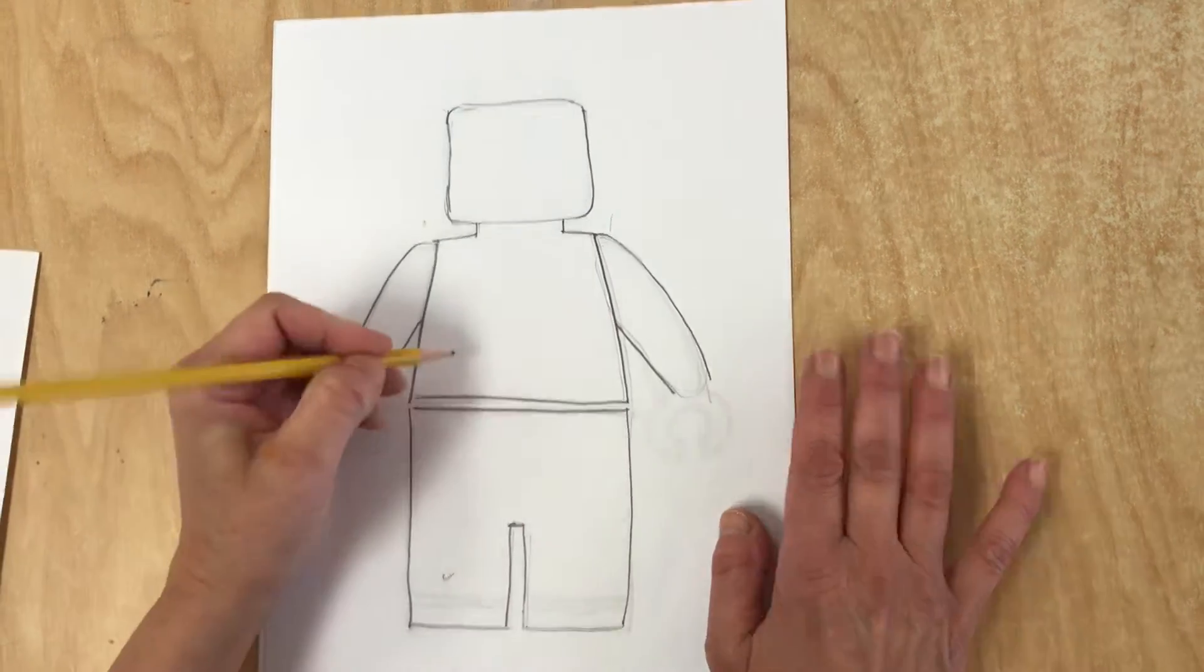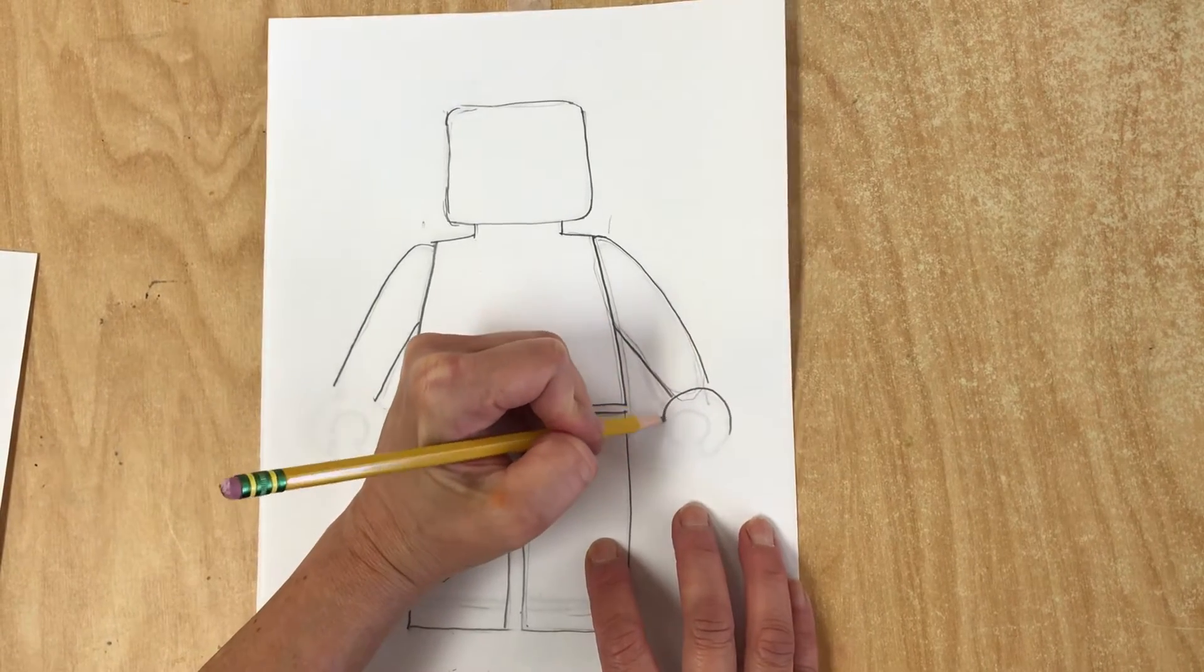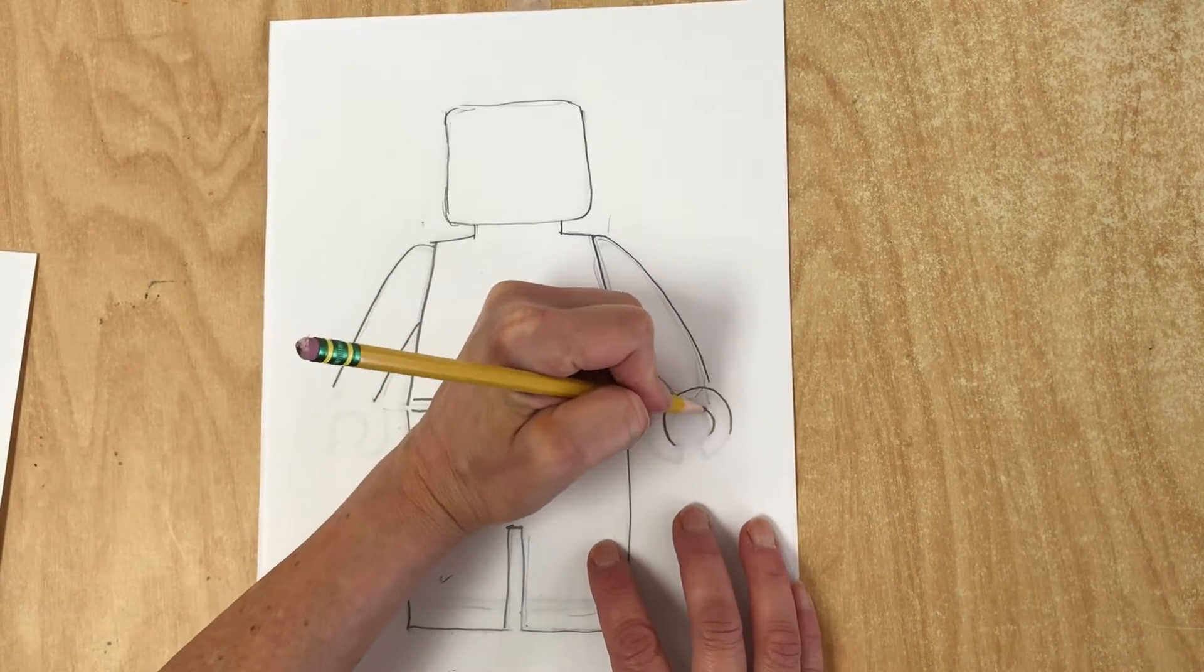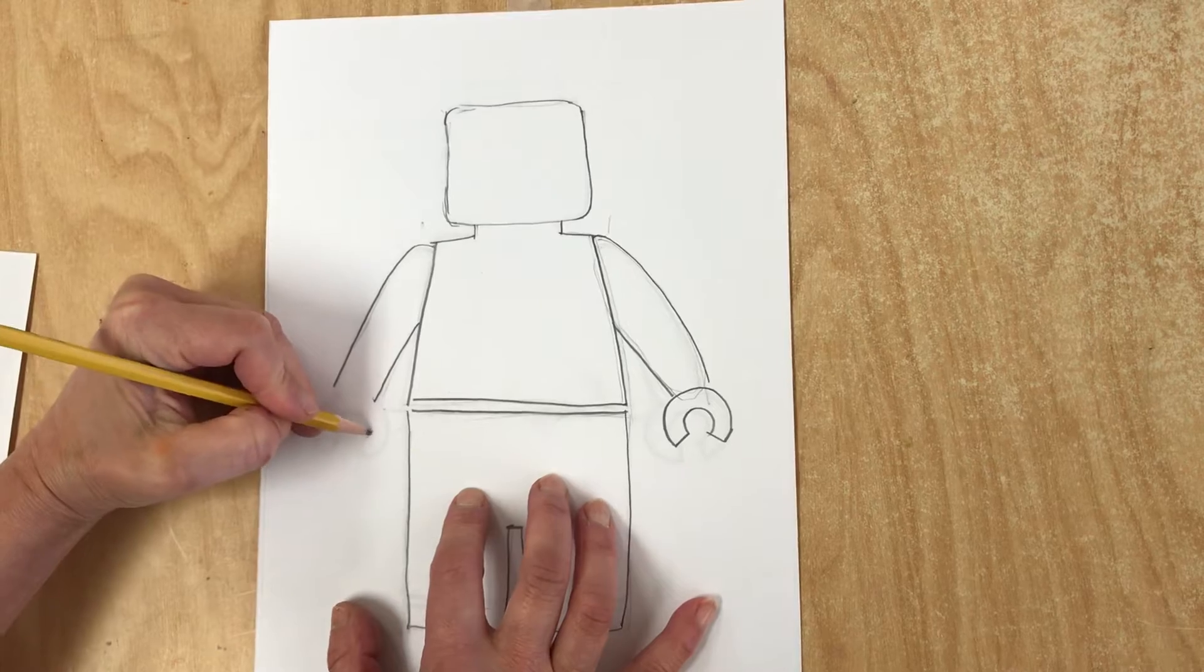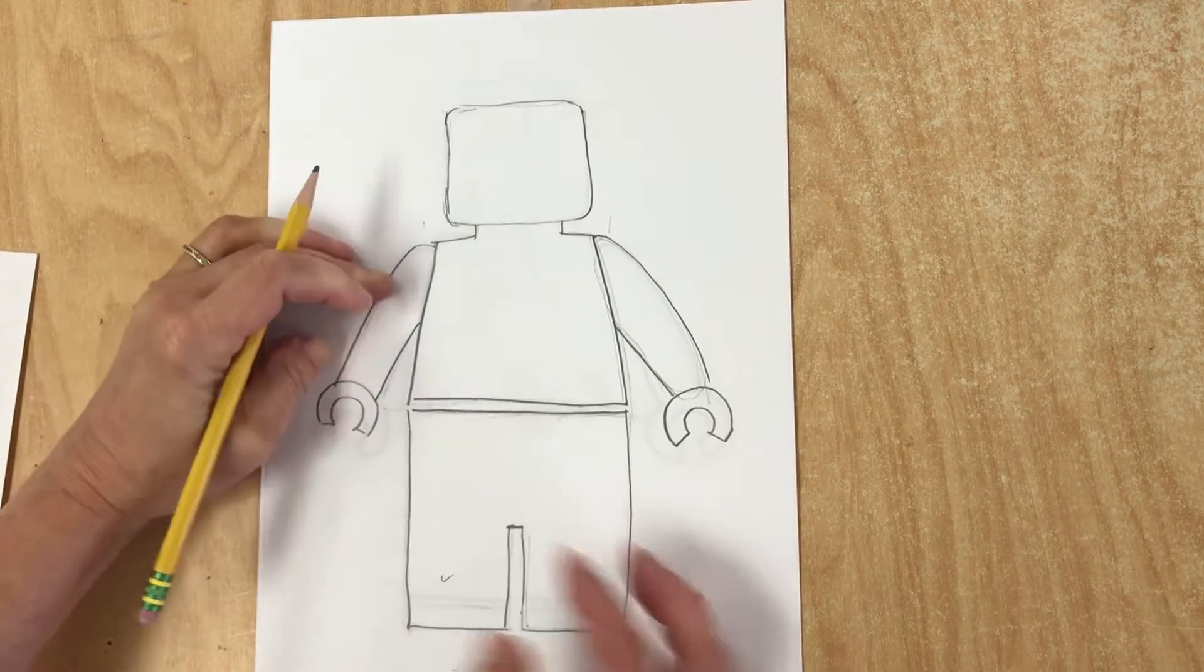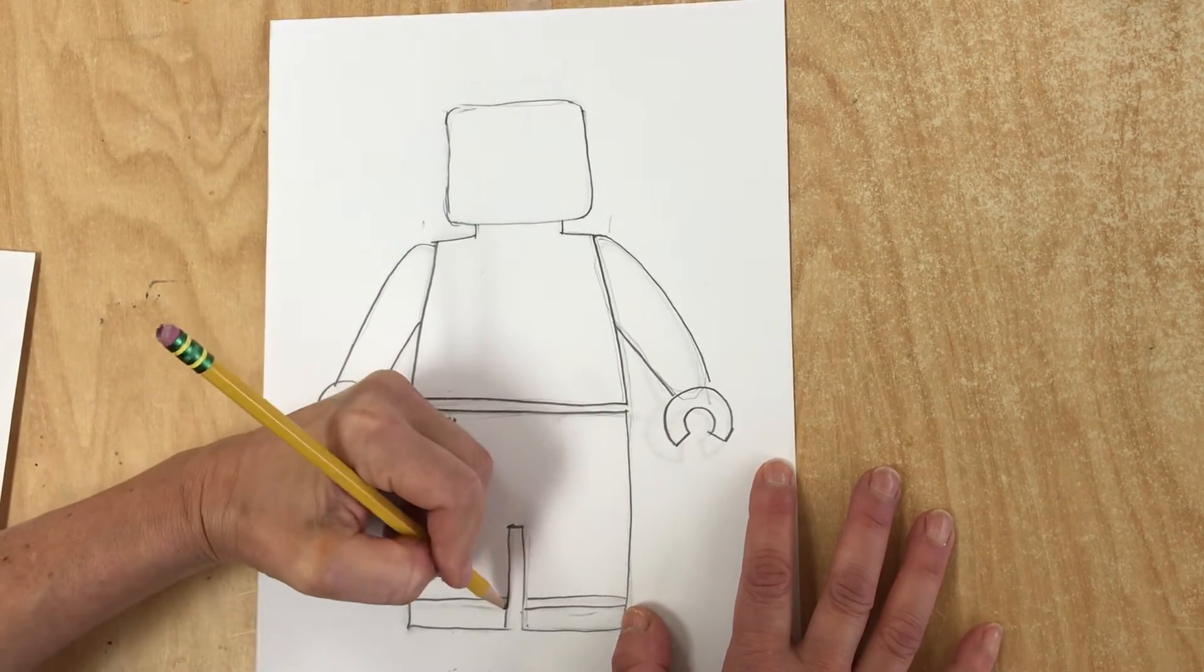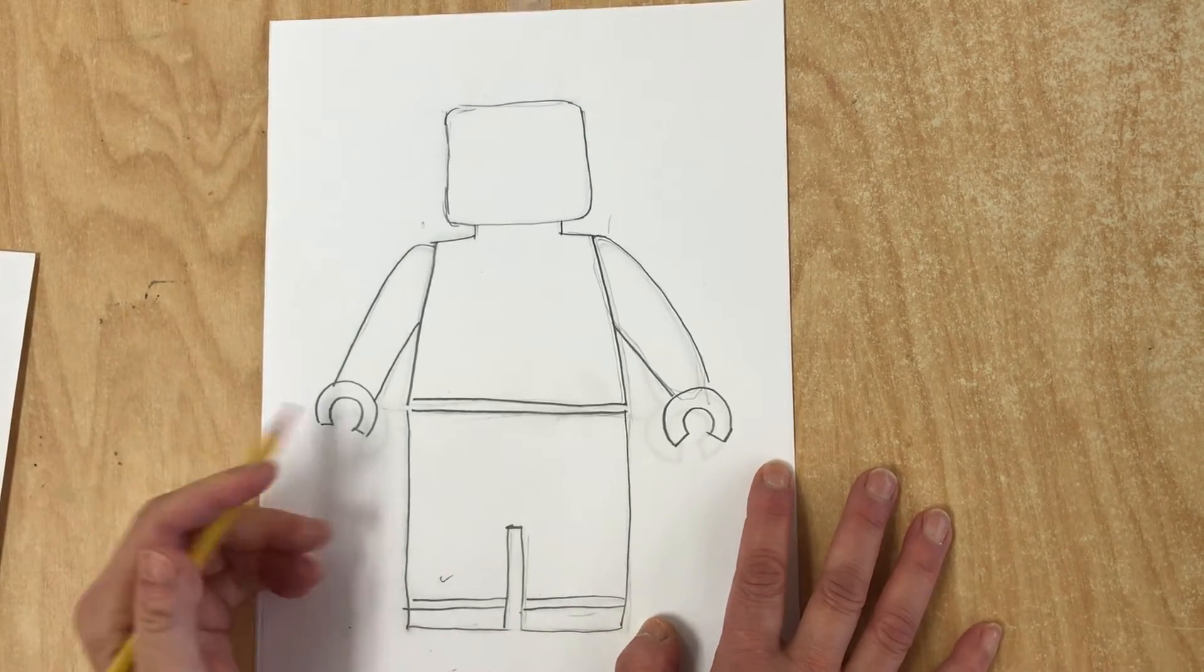If you're familiar with these Lego people, their hands are like the letter C because they snap onto things. Letter C, another letter C. And basically the shoes, when you're looking straight ahead, you can't really see them. They just look like rectangles, but you can try to make it look like sneakers or other kinds of shoes.